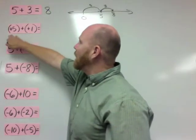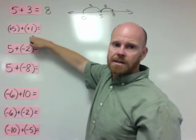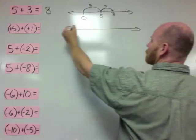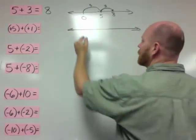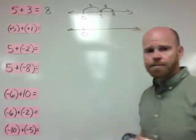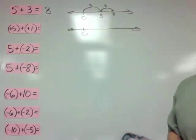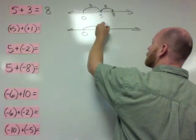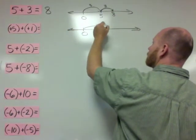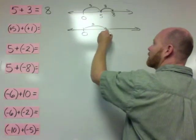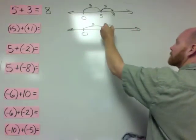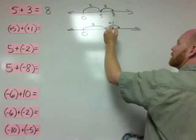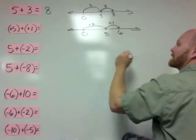This one is positive 5 plus positive 1. Once again, we're going to draw an empty number line. We always start off at 0. Positive 5, once again, means it's a hop to the right of 5, which puts us at 5. Positive 1 is a hop to the right of 1, so we're going to end up at 6.